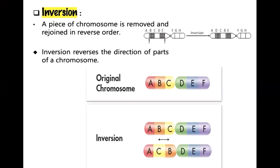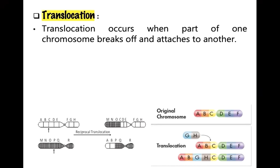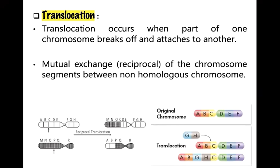Inversion reverses the direction of parts of the chromosome. In translocation, an exchange of parts between two non-homologous chromosomes is called reciprocal translocation. In simple translocation, a segment of one chromosome breaks and is transferred to another non-homologous chromosome — part of one chromosome breaks off and attaches to another, as seen in the diagram.